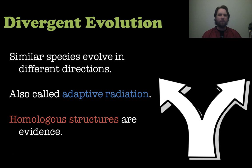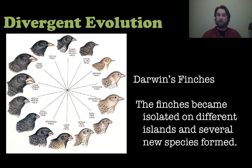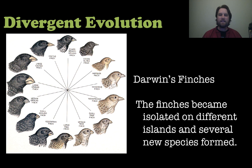Divergent evolution is the opposite — similar species that evolve in completely different directions. This is also sometimes called adaptive radiation, and homologous structures are great examples used as evidence. Darwin's finches found on the Galapagos Islands are great examples: they became isolated on different islands, had different environments and needs, and several new species formed from that original mainland finch.